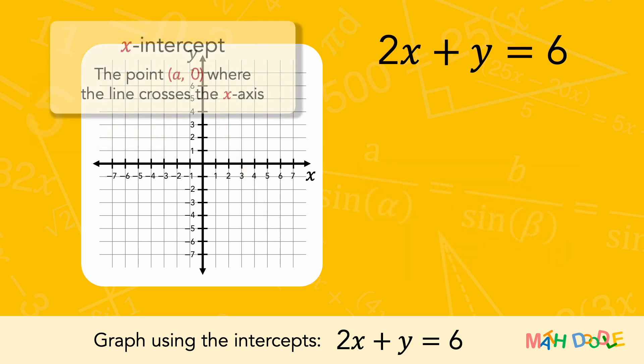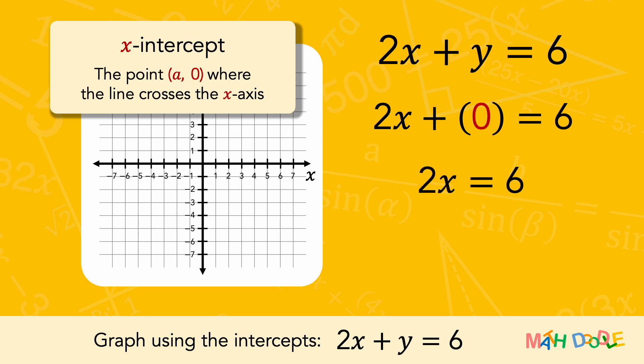First, let's find the x-intercept. At the x-intercept, y is 0. So, let's substitute 0 for y and solve the equation for x. The equation can be simplified to 2x equals 6.